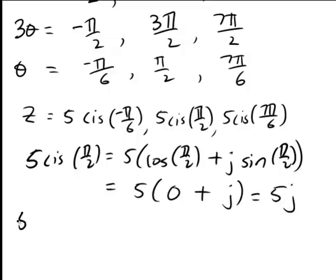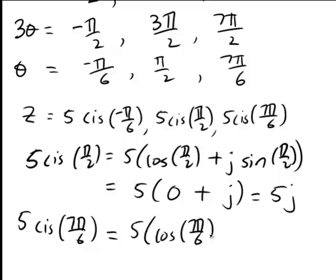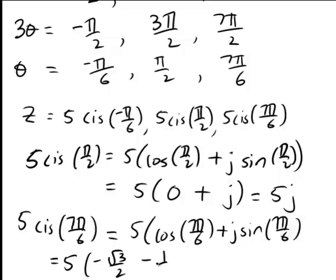And the last one, 5 cis(7π/6), once again that's just going to be 5 cos(7π/6) + j sin(7π/6), which works out to be, in this case, 5 × (-√3/2 - 1/2 j), which becomes -5√3/2 - 5/2 j.